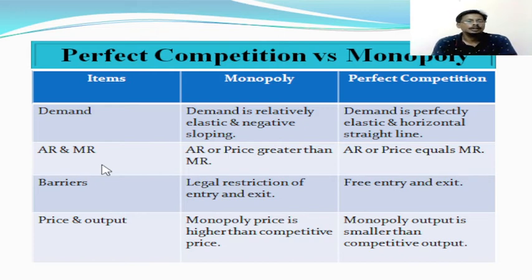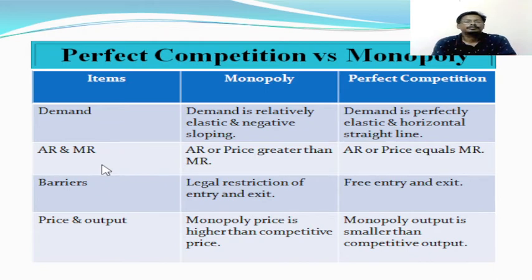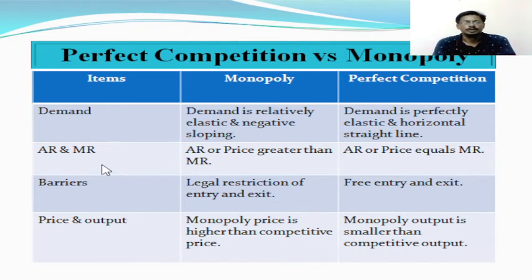Another difference relates to barriers. In case of monopoly market, the entry and exit of a firm is restricted through licenses. Without any prior permission or patent right, no firm can enter the market, and the firm that has attained the patent right cannot leave the market without prior permission either. But in case of perfect competition, no such restrictions exist. Competitive firms may enter and exit the market freely without any restrictions.